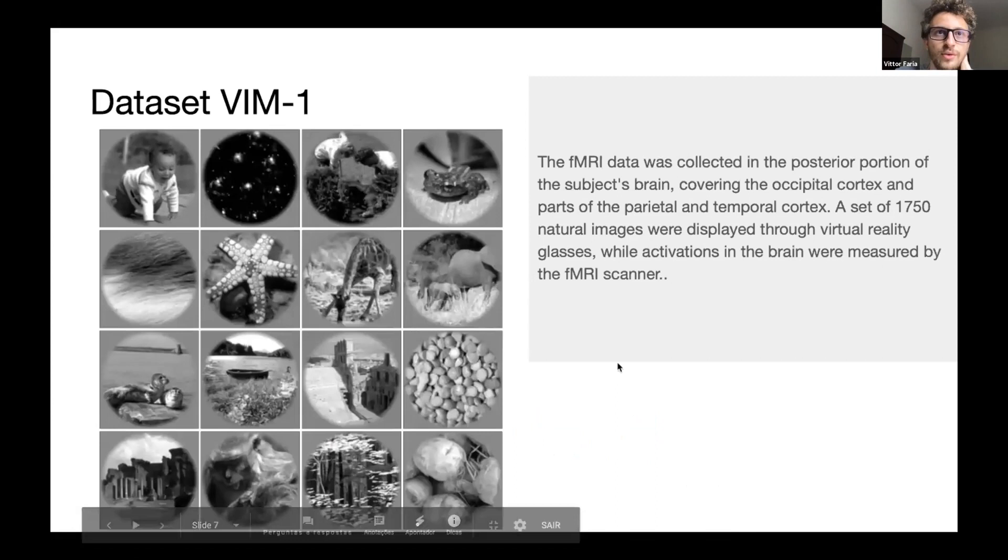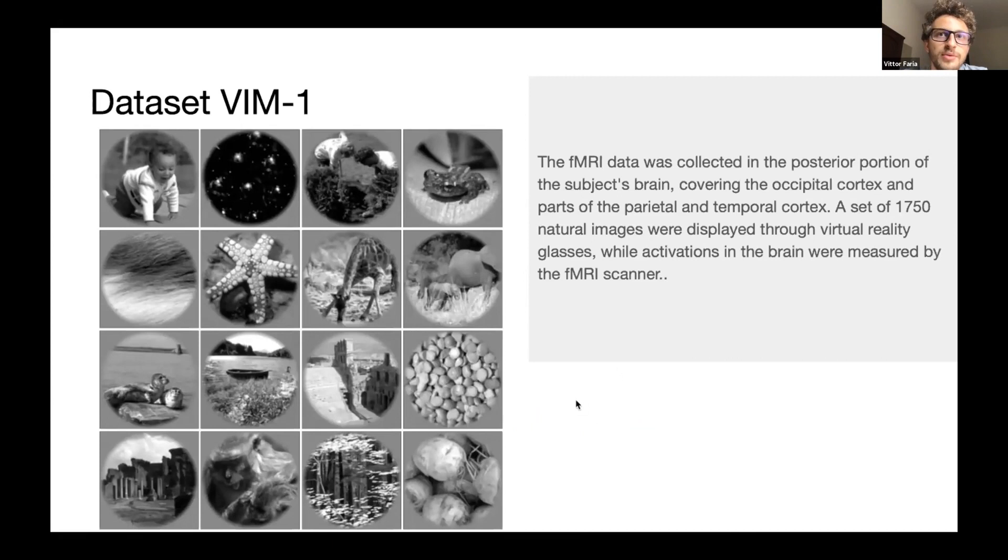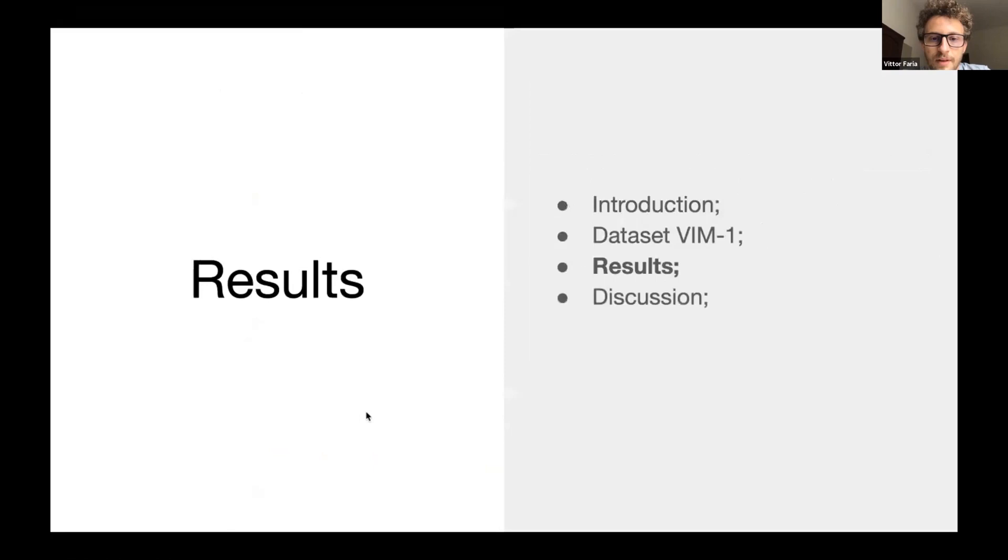And so, these are samples of the images. There are many kinds of images: humans, animals, landscapes, textures, buildings, and so on. Now, I'll discuss some of the results and the analysis we made on the dataset.